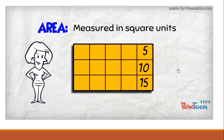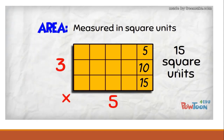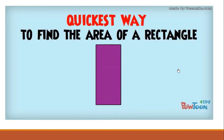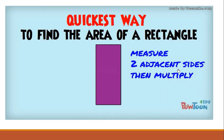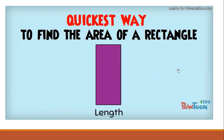We have 3 rows of 5 square units, so 3 times 5 is 15 — giving us 15 square units. The quickest way of finding the area of a rectangle is to measure two adjacent sides and multiply those numbers. These sides are next to each other, so they are adjacent. We call them length and width. So the area of a rectangle is length times width.